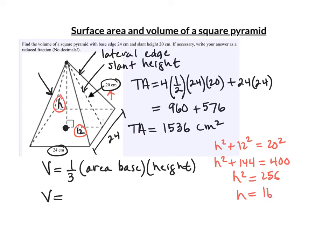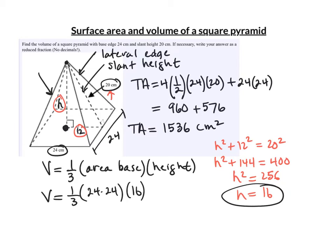Now we have everything we need for the volume: one-third times the area of the base (24 × 24) times the height (16). Multiplying all that out, the volume is 3,072 centimeters cubed.